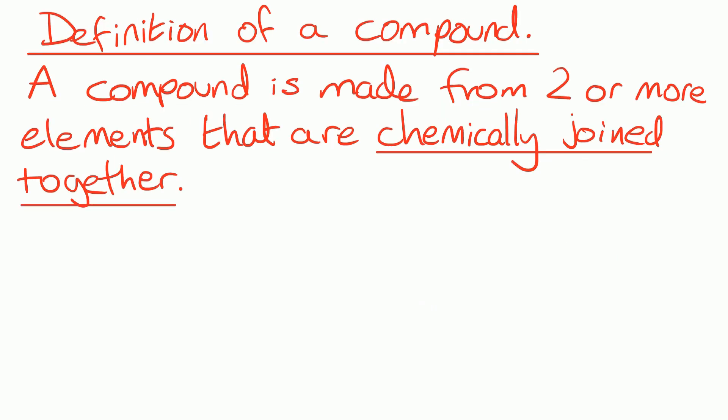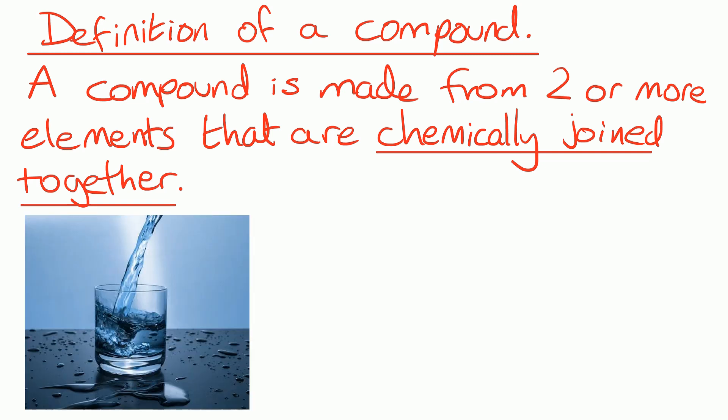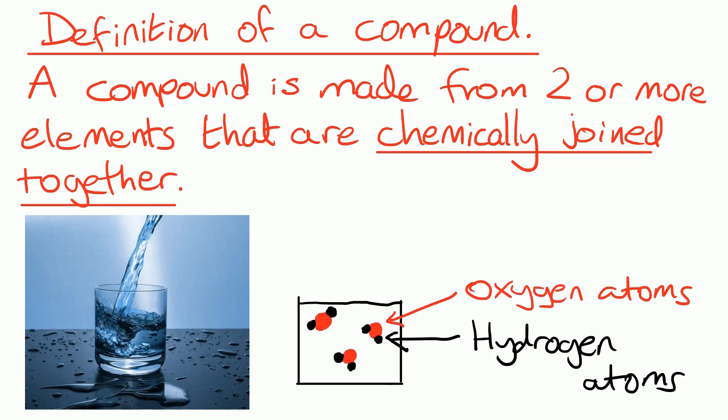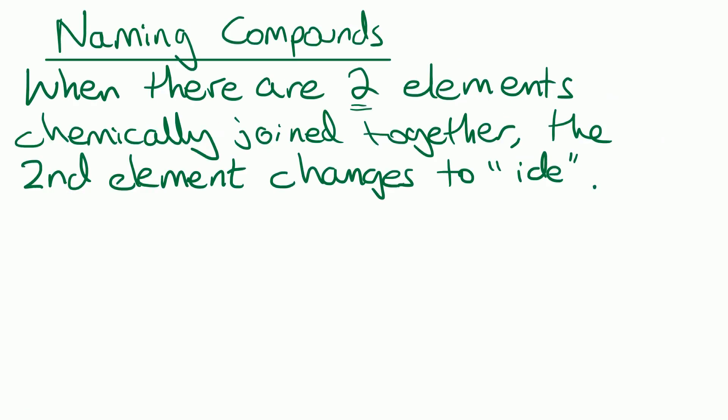The definition of a compound that you need to learn is that a compound is made from two or more elements that are chemically joined together. If we think about the atoms and molecules in water, we can see that each water molecule is made from oxygen atoms and hydrogen atoms chemically joined together, and that's what makes it a compound. If they weren't chemically joined together, it would just be a mixture.